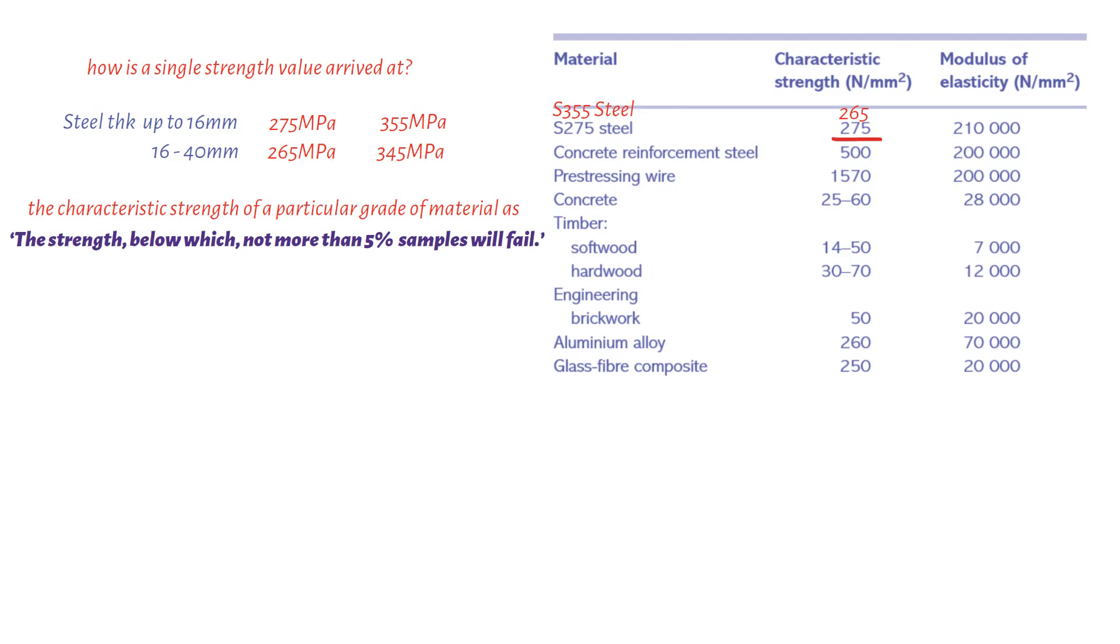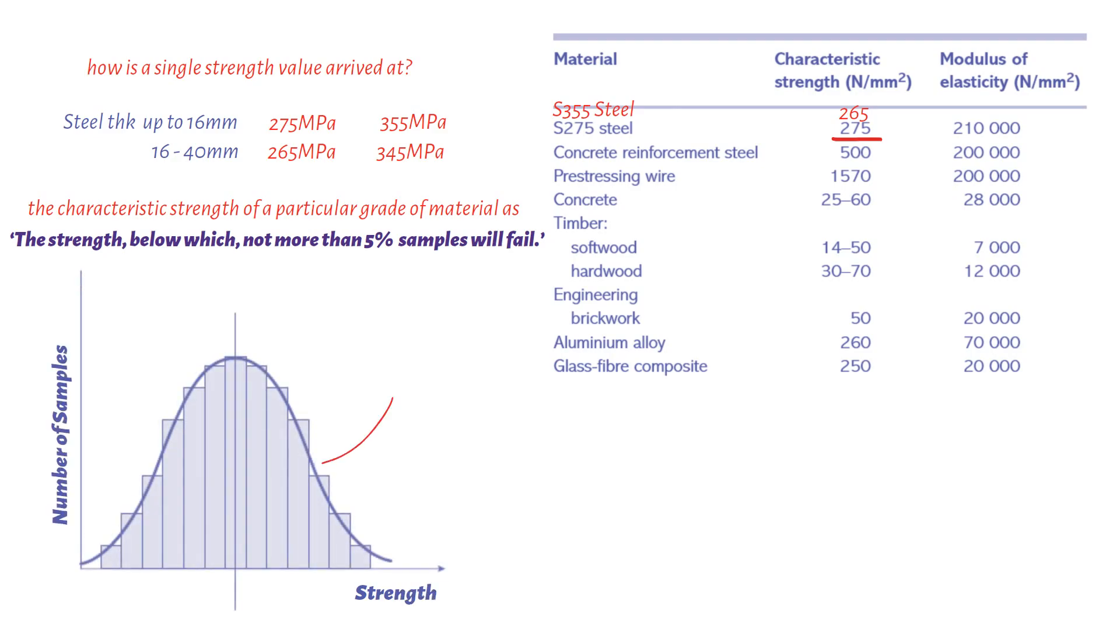Experience has shown that in general, the strength of a large number of samples of the same structural material will be distributed about the mean value in the form of a normal distribution. If we plot strength against the frequency of a particular strength occurring, we get the familiar bell-shaped curve. This indicates that most sample strengths are close to the mean value, but a few are significantly stronger and a few are significantly weaker.